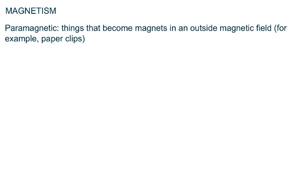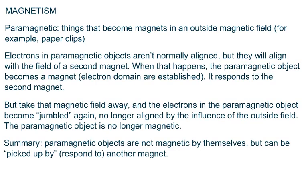You can pick up a paper clip because when you bring the magnet nearby, that magnetic field aligns the electrons in the paper clip, and the paper clip — because of its aligned electrons — is now magnetic itself and responds to your permanent magnet. But if you take the magnetic field away, the electrons go back to the way they were, they're no longer aligned, and your paper clip is no longer magnetic.